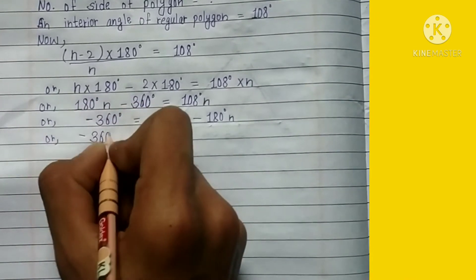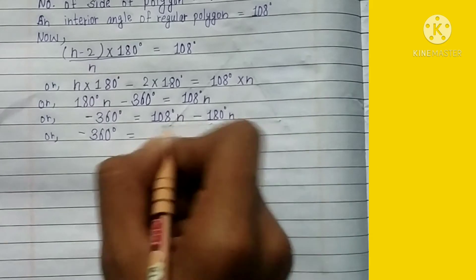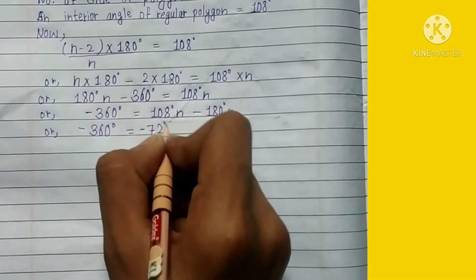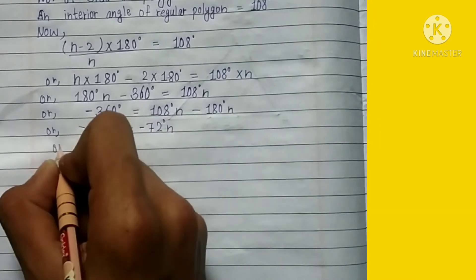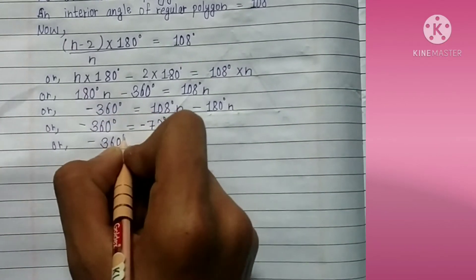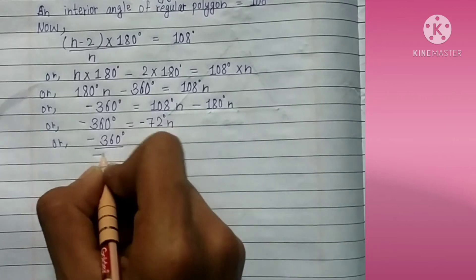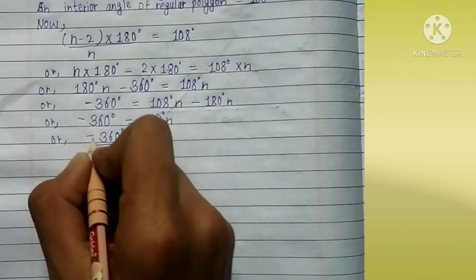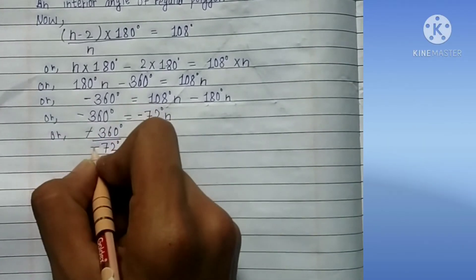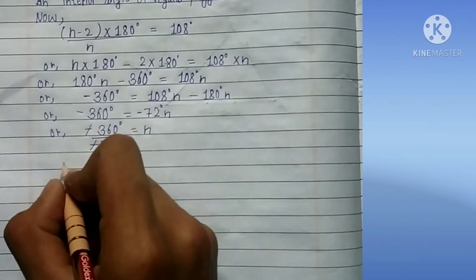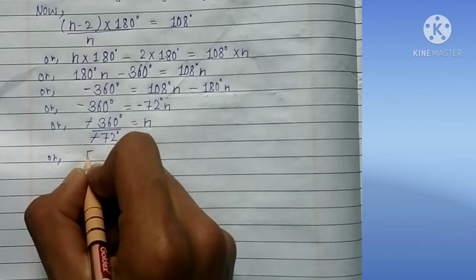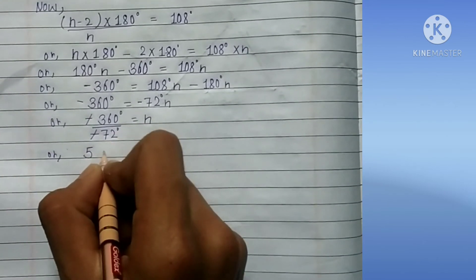When we carry out this step, the sign has been changed into negative. Now, minus 360 degrees equals minus 72 degrees times n.